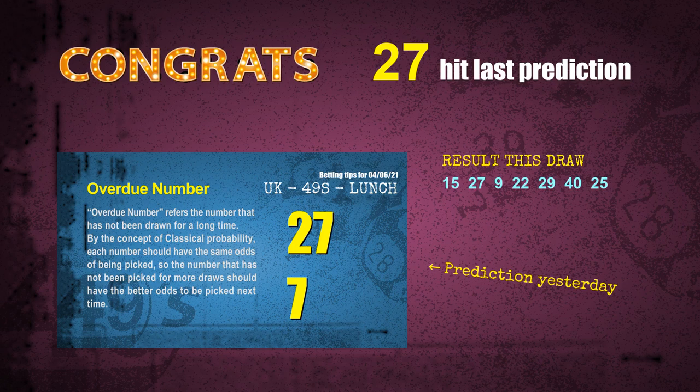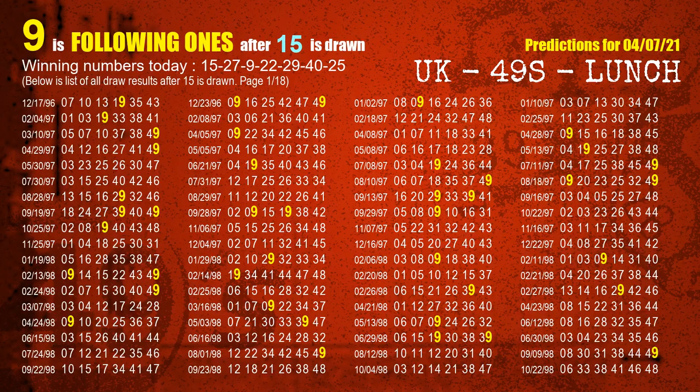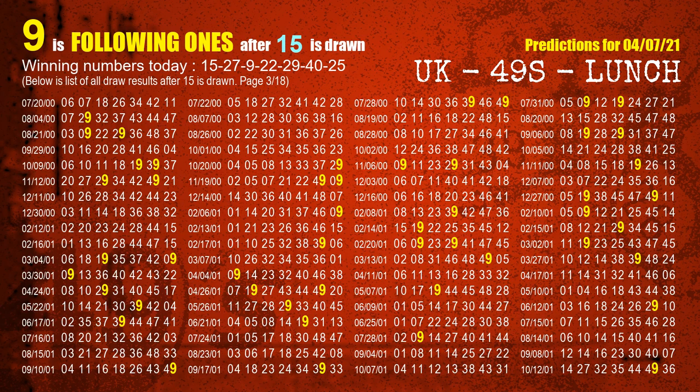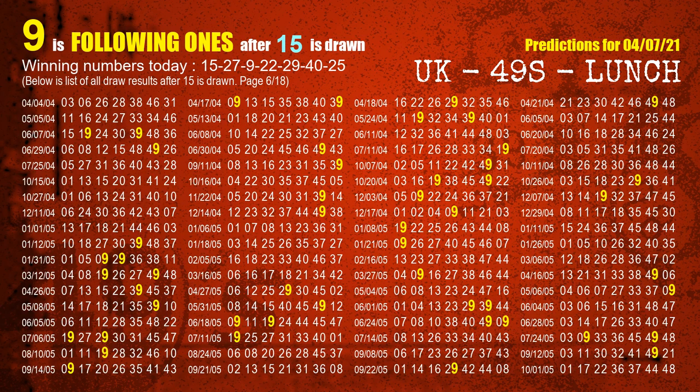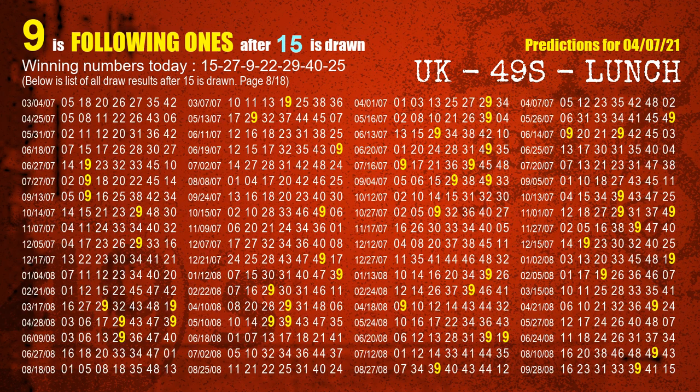We will tell you how to find out the winning numbers of the next draw step by step. First, we find out the following ones through today's result. Following numbers refer to those numbers being picked on the next draw after this one, and following ones are the units digit of those following numbers. The first winning number is 15. The most frequently following units digit is 9 when 15 is the winning number in the last draw — highlighted in yellow.